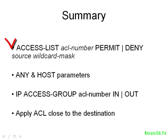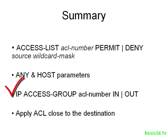To summarize, we covered the structure of the standard access list. Be sure to remember the access list number ranges, and the different options for source and wildcard masks — in particular, the 'any' and 'host' parameters. We also introduced the 'ip access-group' command to apply an access list to an interface, specifying the access list number and direction — inbound or outbound. As a general rule, apply a standard access list as close to the destination as possible to avoid interfering with other traffic flows. That is the standard access list structure and configuration.